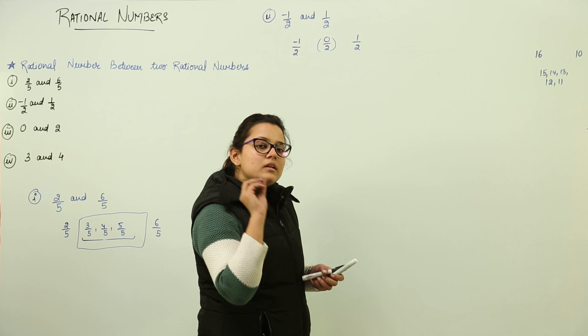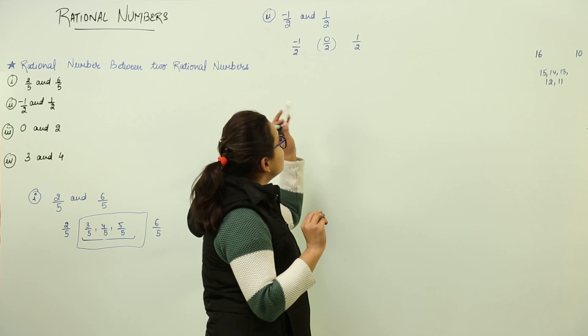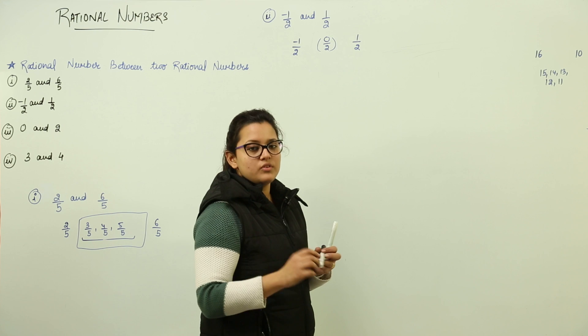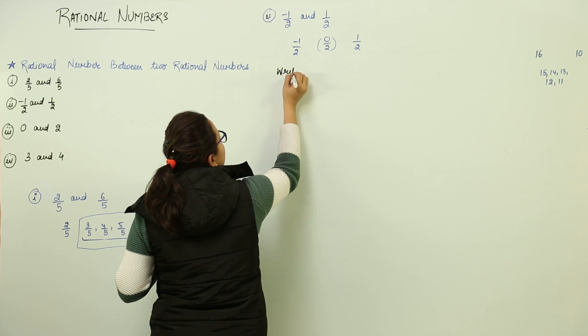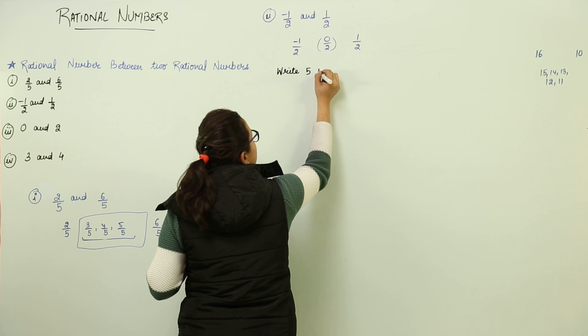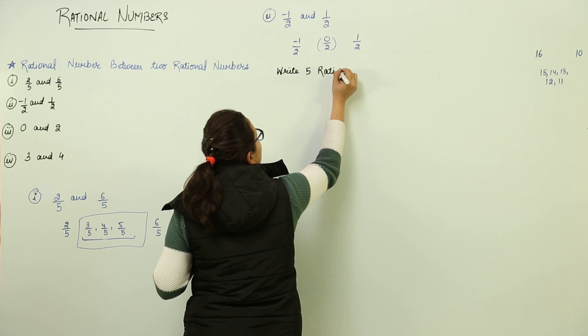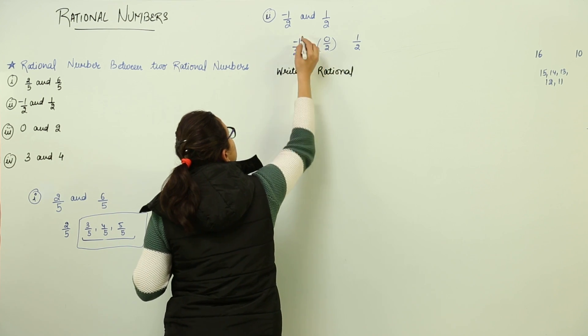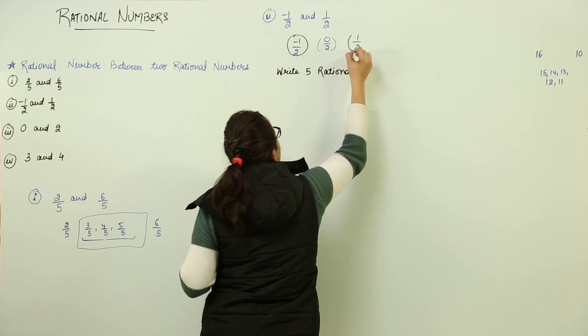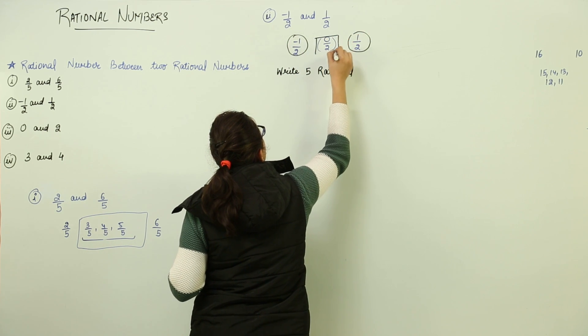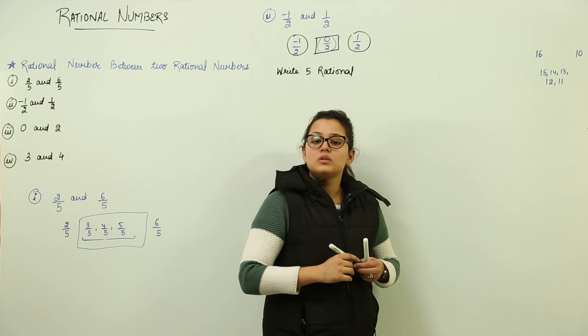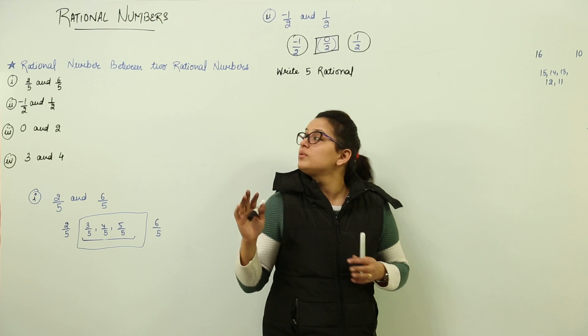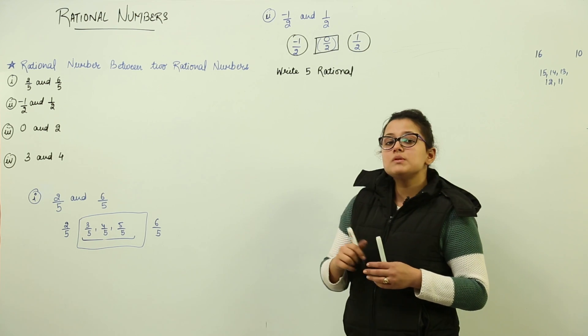I want to make this question a little more difficult by saying write five rational numbers between them. Now how would you do that? Because these two numbers contain only one rational number between them, that was zero over two. Now how would you write five rational numbers between them?